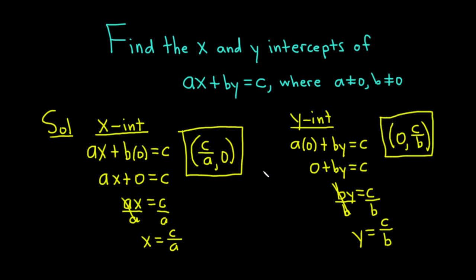The main point to take away from this video is whenever you're looking for an intercept, you set the other one equal to zero. If you're looking for the x-intercept, you set y equal to zero. If you're looking for the y-intercept, you set x equal to zero. Hopefully this video has taught you some mathematics. If you feel like you've learned some math, make sure to check out more videos. Until next time, good luck.